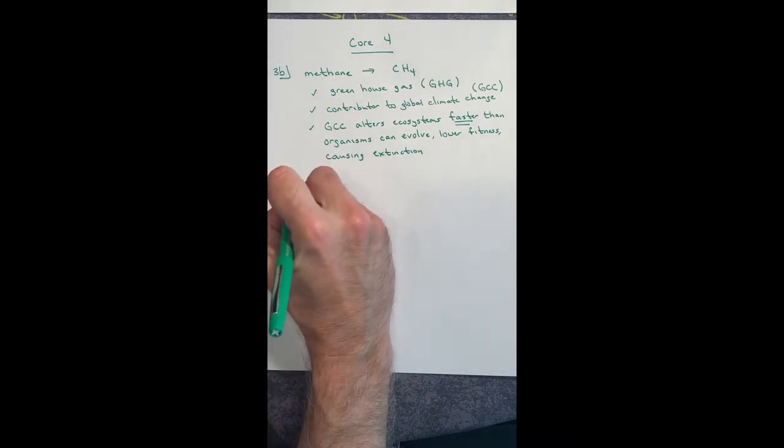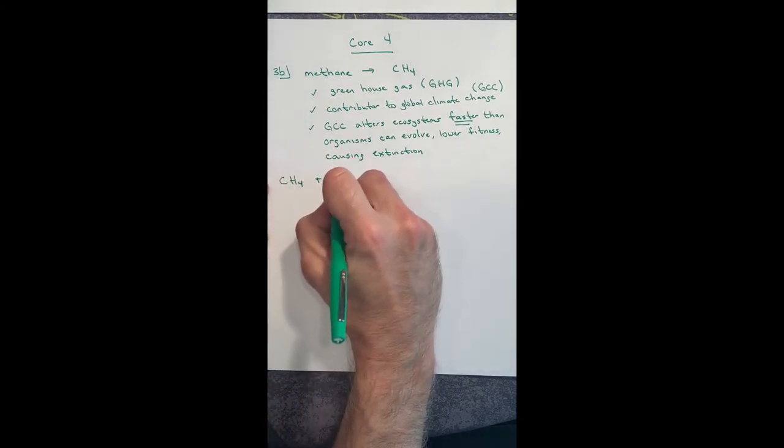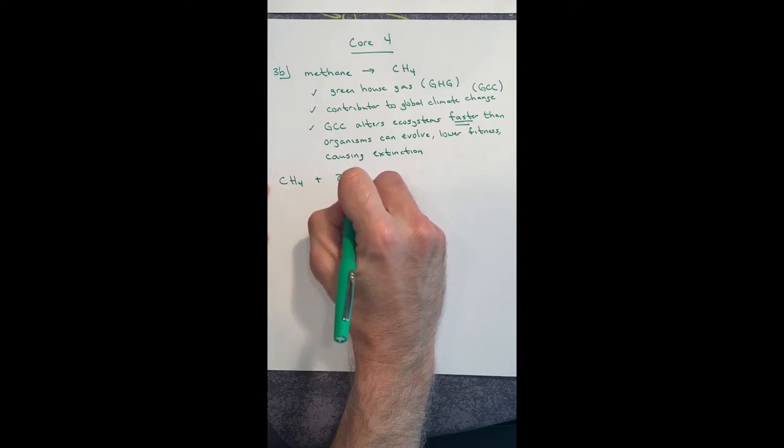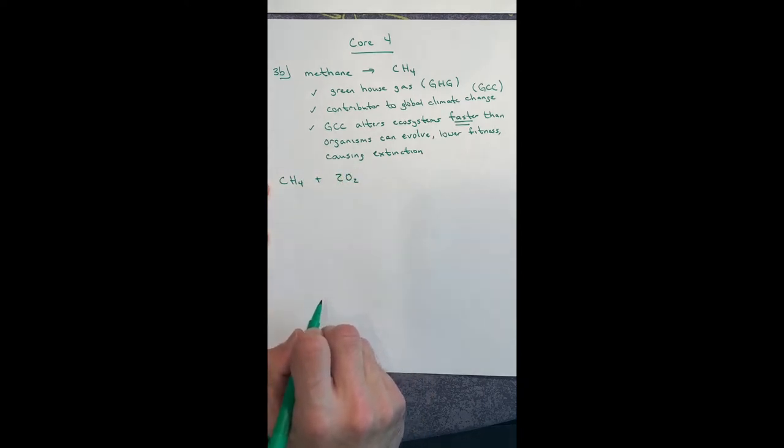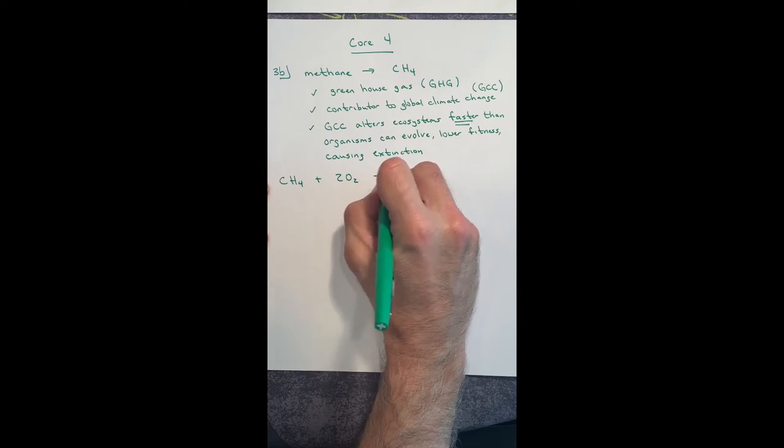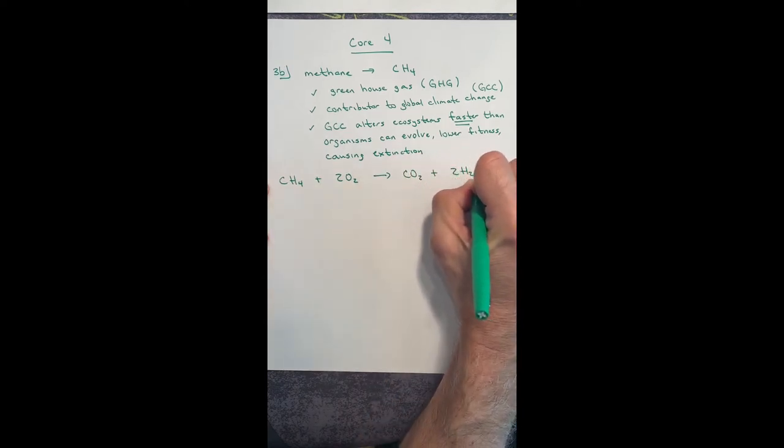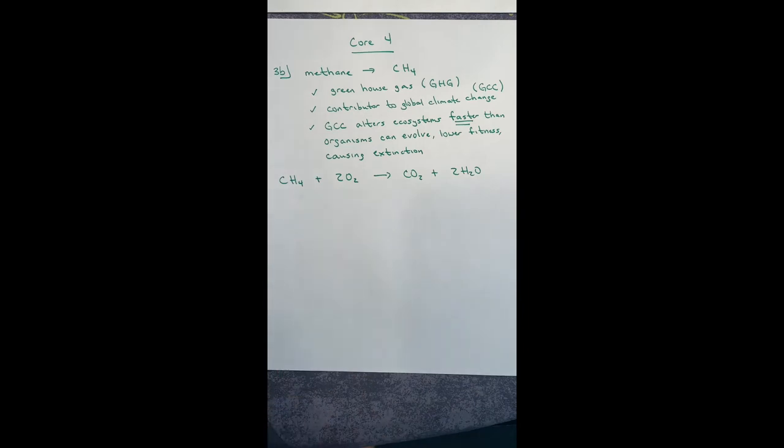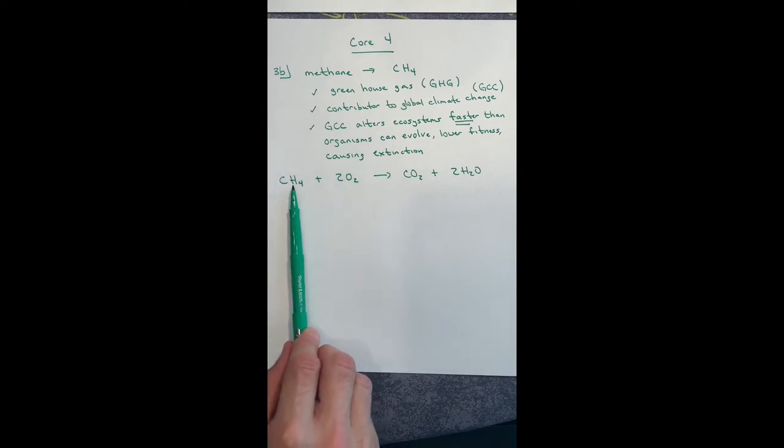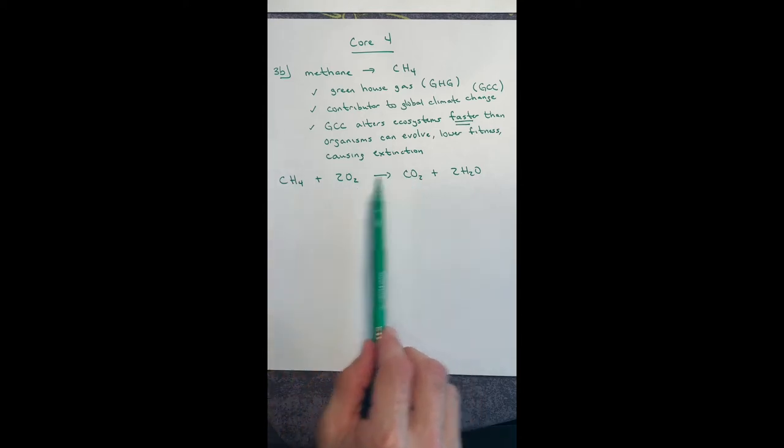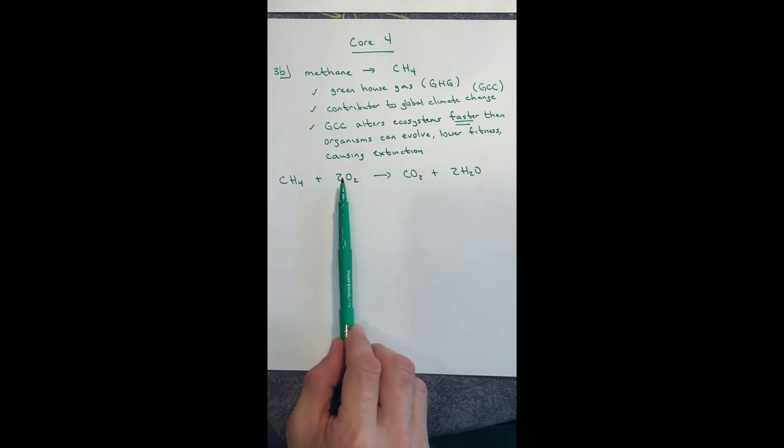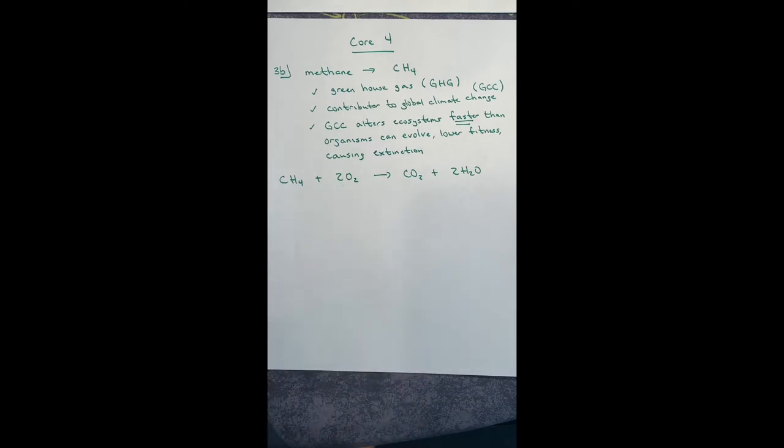So when we produce methane in the atmosphere, methane reacts with two moles of oxygen to produce CO2 and two moles of water. So while someone sits back and says, by burning this fuel doesn't produce as much CO2 as other fuels, but methane can be converted into CO2 very easily when it reacts with the oxygen in the atmosphere.